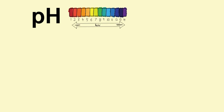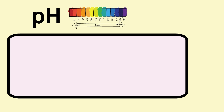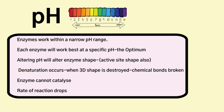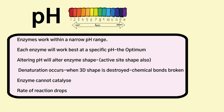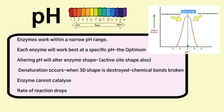pH is another factor that affects enzyme activity, and enzymes have a very low tolerance to changes in pH — they work within a very narrow range. Most enzymes will work best at a specific pH, their optimum, catalysing at their fastest rate at the optimum pH. If you alter the pH, you alter the enzyme shape and therefore the active site shape too. This results in denaturation, the enzyme cannot function, and the rate of reaction will drop. Note the difference between the pH graph and the temperature graph.